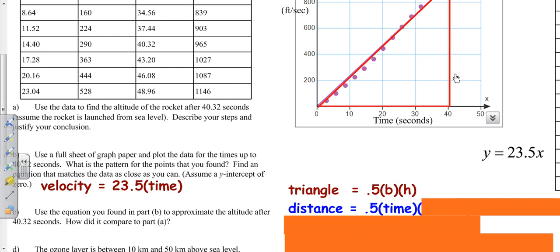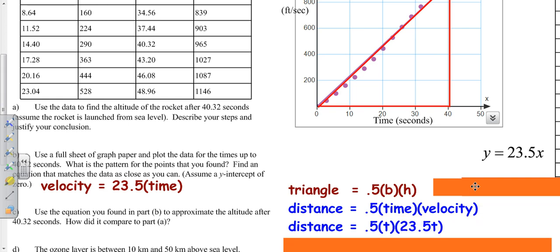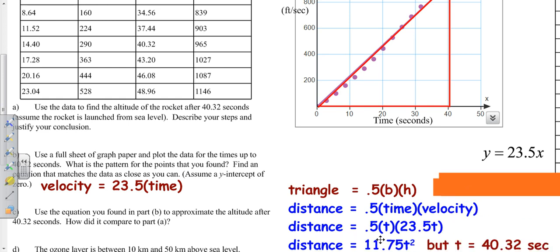Our time is t, our velocity is 23.5 times your time. That simplifies down - half of 23.5 is 11.75, t times t is t squared. So distance equals 11.75t squared.